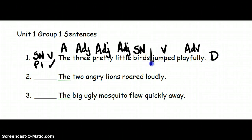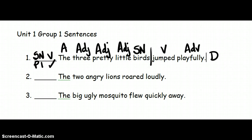Go back to the verb. Divide the complete subject from the complete predicate. Now, as you can see, we find the subject, the verb, then we work out to the end of the sentence, then we go back and we work backwards from the subject noun to the beginning of the sentence, identifying what each word does. Let's try sentence two.